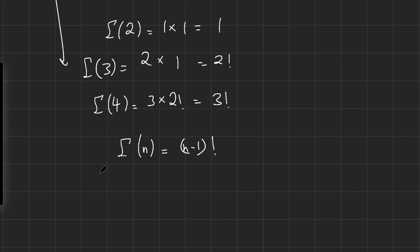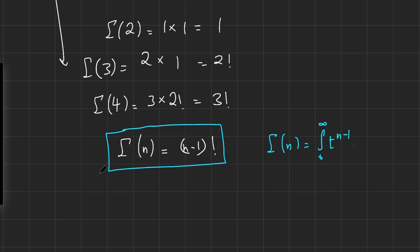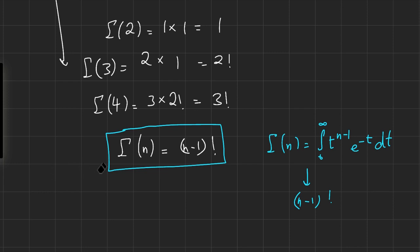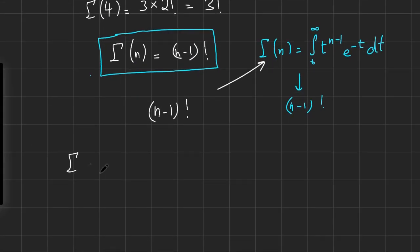So it seems we can extend the factorial by saying: gamma of n — the integral from 0 to infinity of t to the n minus 1, e to the minus t dt — equals n minus 1 factorial for non-negative integers. Why not assign this integral as the definition of n minus 1 factorial itself? That would mean we could calculate gamma of pi: the integral from 0 to infinity of t to the pi minus 1, e to the minus t dt — an integral that does converge — giving us pi minus 1 factorial.